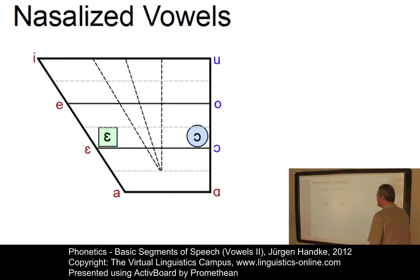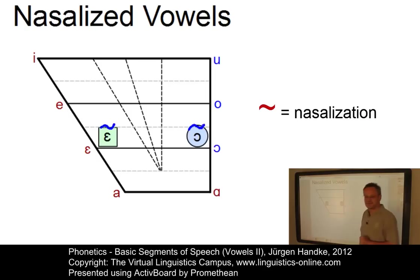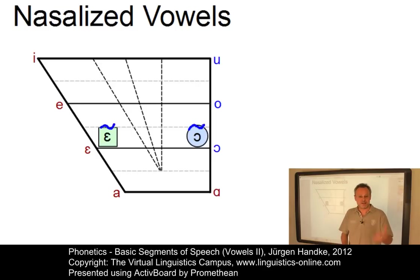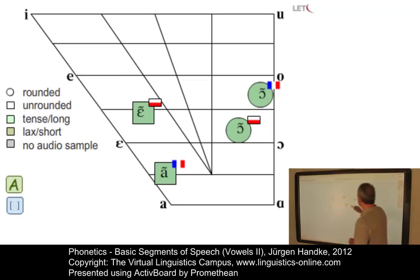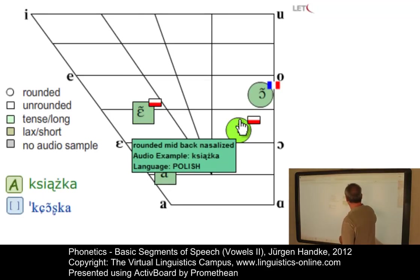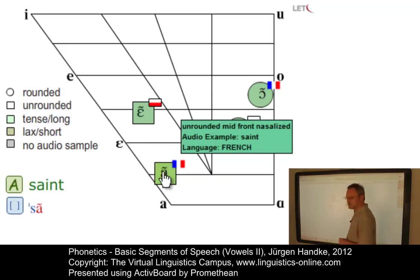Nasalized vowels are represented by their standard symbol plus an additional diacritic — a tilde-like symbol — to indicate that they are nasalized. Here are two examples from French and Polish, two languages that have nasalized vowels. Polish: 'herbatem', 'ciążka'. And French: 'son'.